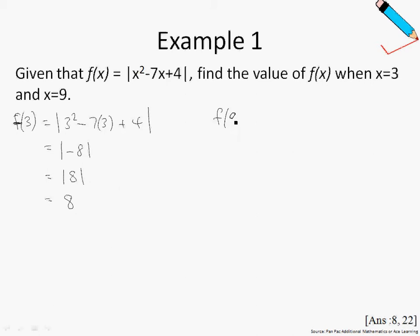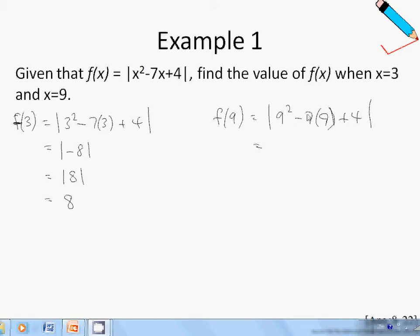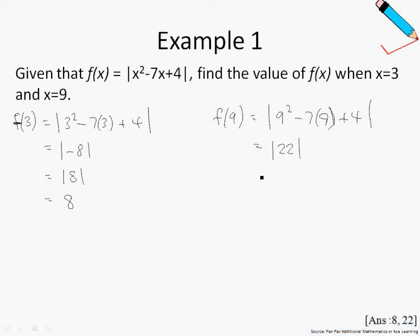For f(9), I replace all the x's with 9. So 9 squared minus 7 times 9 plus 4, close modulus. Working this out gives the mod of 22. Since 22 is already a positive number, the final answer is just 22. Take note that the modulus sign does not do anything special to a positive number — it will still remain as a positive number.